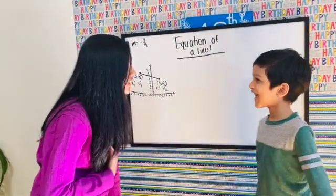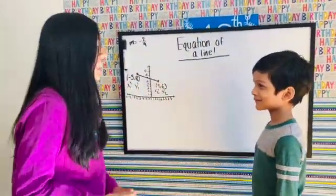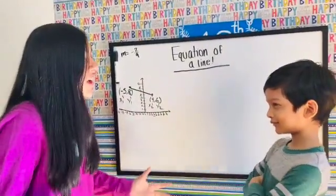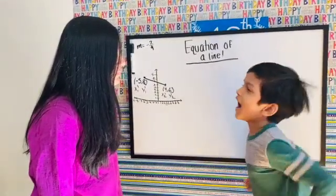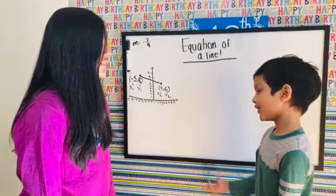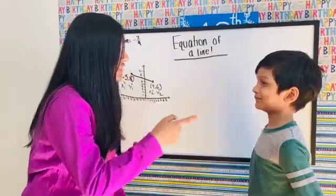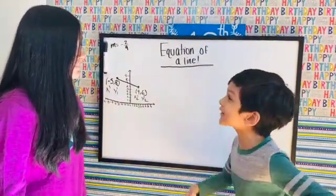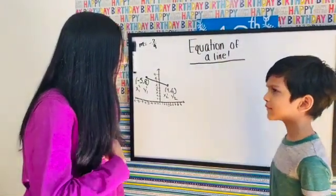The siblings argue about who gets to do the intro. One insists that because they're older, they always do it. The other pushes back, saying they're the boss and that the older sibling doesn't control them, but the older one maintains that seniority means they lead the intro.